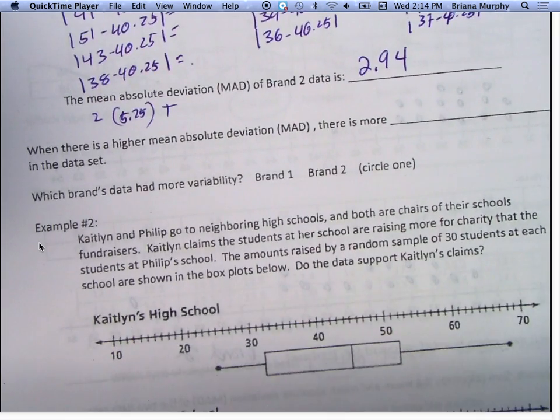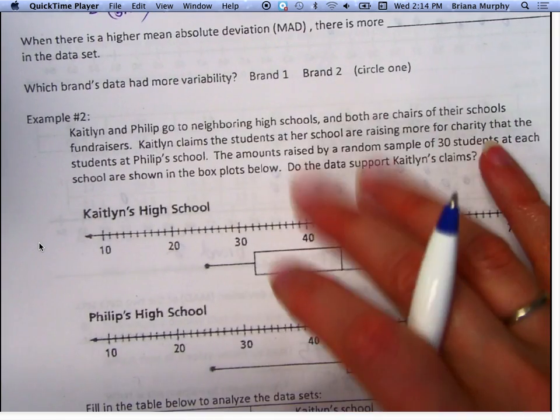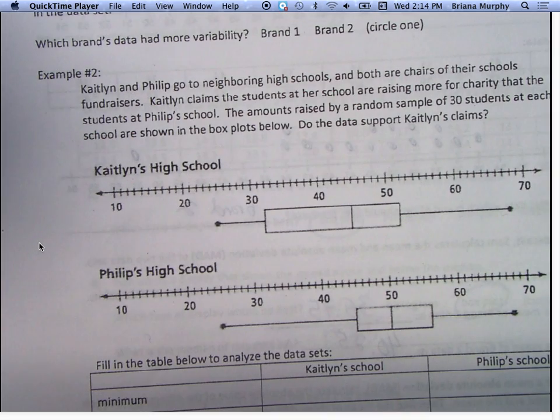Let's move on to Example 2. We want to look at these box plots. Kaitlyn and Philip go to neighboring high schools and both are chairs of their school's fundraiser. Kaitlyn claims the students at her school are raising more for charity than Philip's school. The amounts raised by a random sample of 30 students at each school are shown in the box plots below.